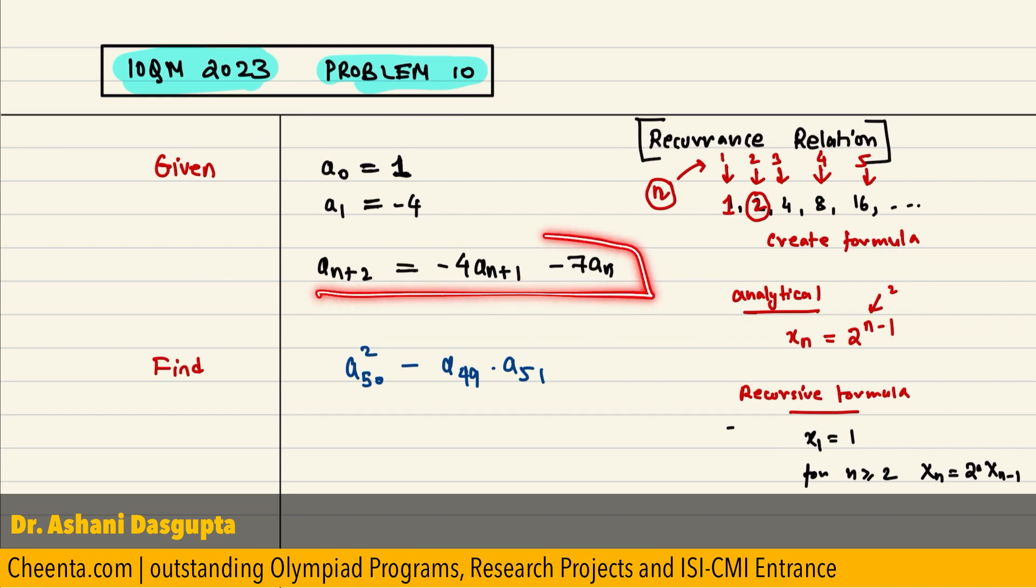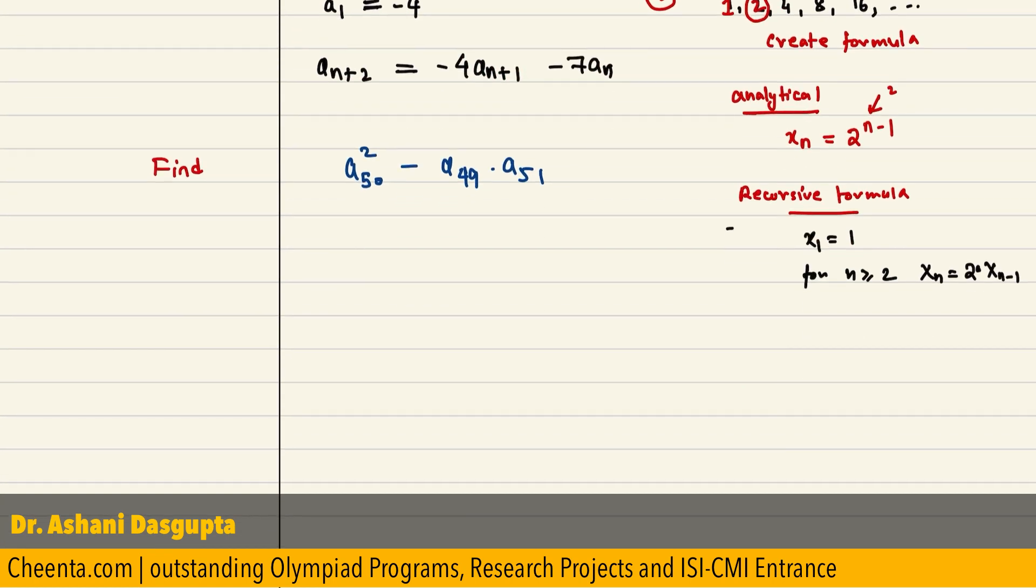So, this particular relationship holds, that is a(n+2) is equal to negative 4 a(n+1) minus 7 times an.